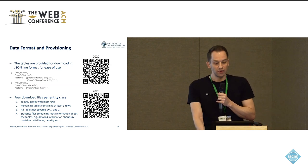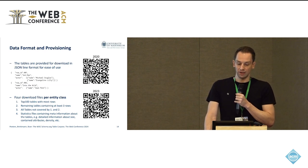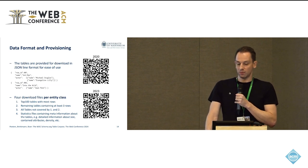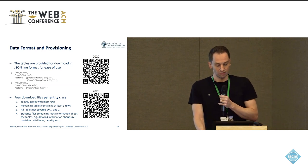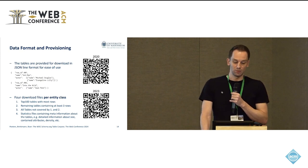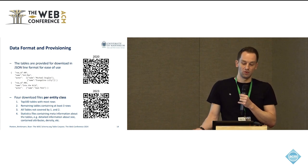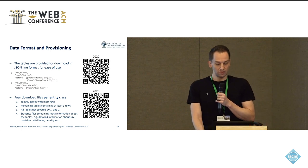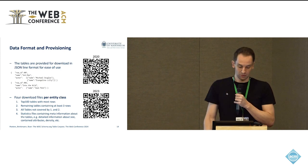The tables are provided for download in the JSON Lines format, so you can easily read them with your favorite data wrangling application. We offer four download files per entity class: first the top 100 tables with the most rows, second the remaining tables containing at least three rows, and then also all the tables not covered by those two. We also have statistic files available with meta-information about the tables — size, contained attributes, density, and so on — so if you're looking for specific tables with specific attributes, you can use the statistic files to identify which tables are relevant and then extract only those.